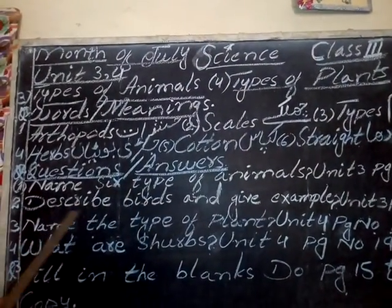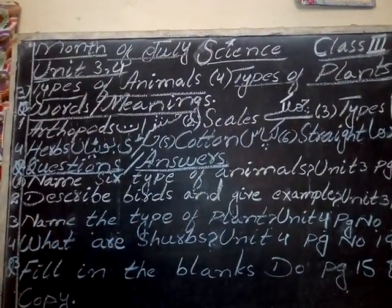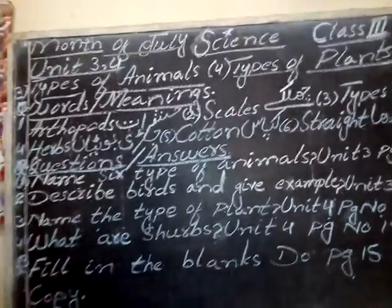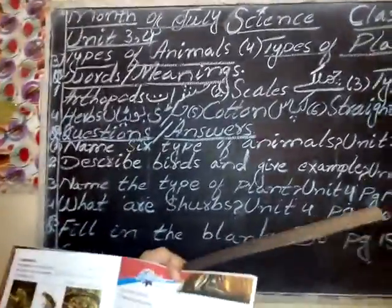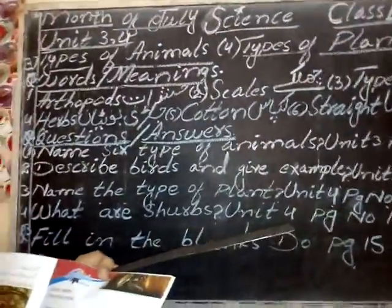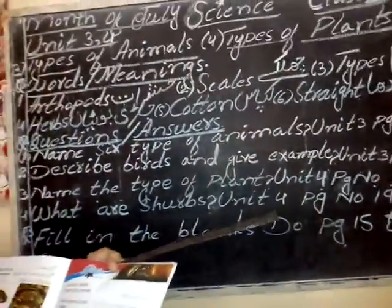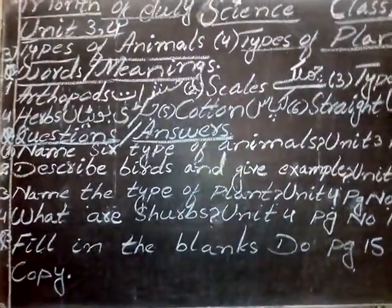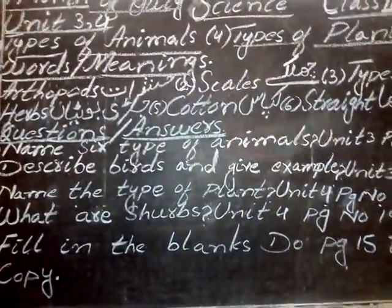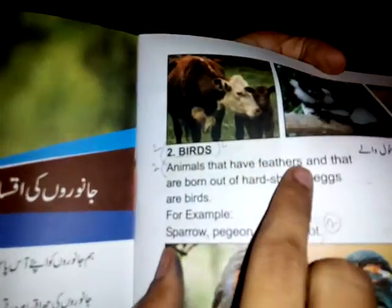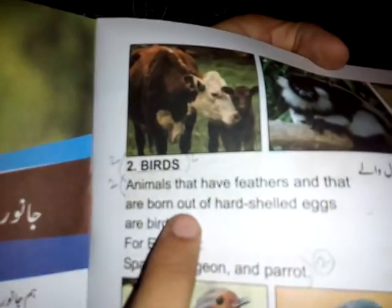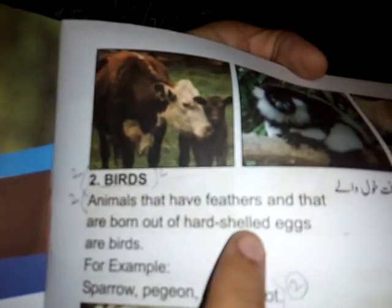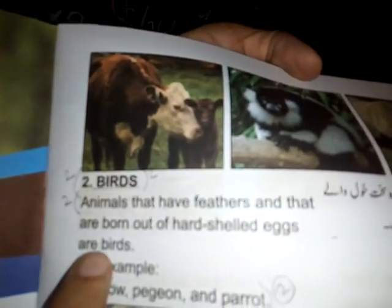Question number 2: describe birds and give examples. Question number three, page number 13. Birds are animals that have feathers and that are born out of hard-shelled eggs.